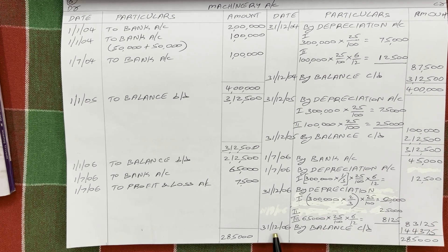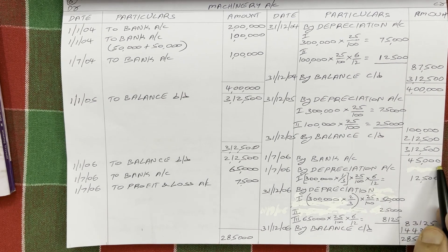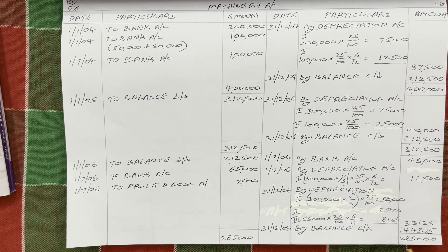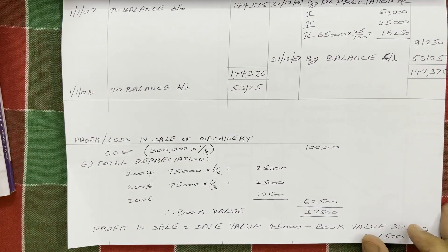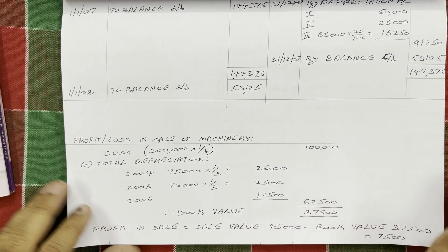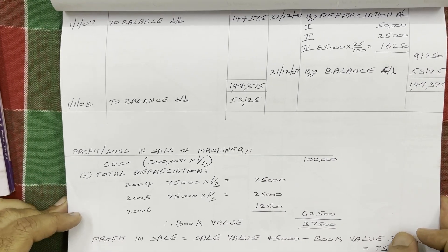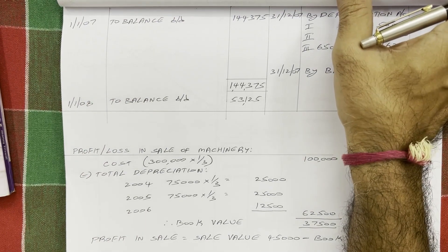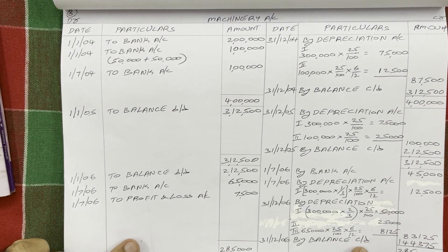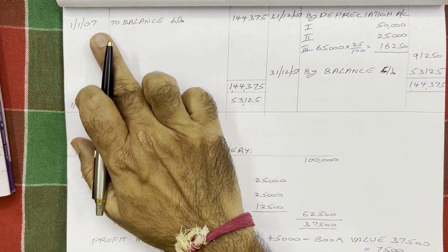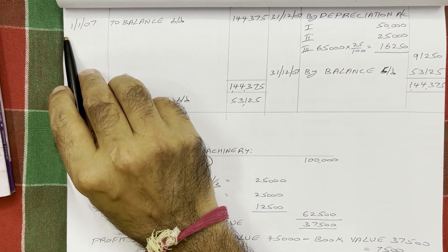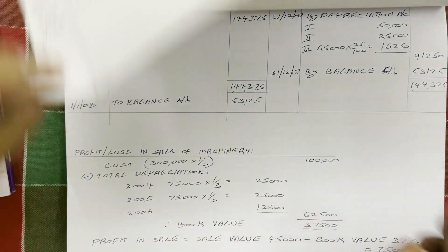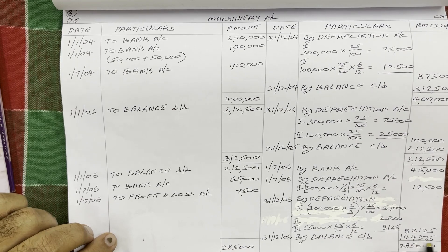Finally on 31st December 2006, balance carried down: debit total 2 lakh 85,000 minus credit amounts (45,000 + 12,500 + 83,125) = 1 lakh 44,375. Since the question asks to show the account up to 31st December 2007, we continue. Bring the balance to the debit side on 1st January 2007: to balance brought down: 1 lakh 44,375.